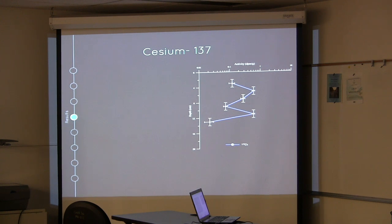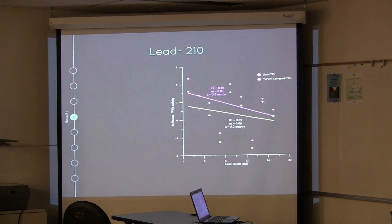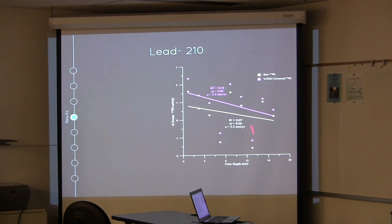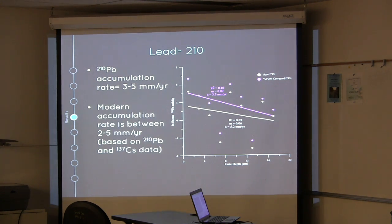For cesium-137, we got back two dates. The first occurrence was between 12 to 14 centimeters, giving us our 1953 date. Our peak cesium-137 was between 10 to 12 centimeters, giving us our 1963 date. From these data, we found an accumulation rate of 2.2 millimeters per year. Our lead-210 data was less conclusive, giving a poor relationship of 0.07 and an accumulation rate of 5.2 mm/yr. When corrected for percent TOM, the relationship improved slightly to 0.16, with an accumulation rate of 3.5 mm/yr. Combined, our accumulation rate range is 2 to 5 millimeters per year, though we think it's closer to 2 because the cesium data was more reliable.